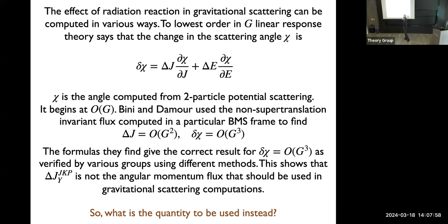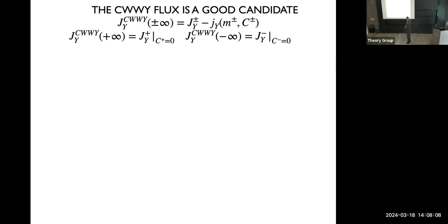There is one such quantity: the flux defined by Chen, Wang, Wang, and Yao. The slight difference is that in their formula they subtract this object at future and past, but in their definition the boundary graviton is different at plus and minus infinity. In their formula they compute an angular momentum that coincides with the canonical BMS angular momentum in a frame where the future boundary graviton is zero, and at past infinity they compute the quantity that coincides with the canonical angular momentum in the frame where the past boundary graviton is zero.